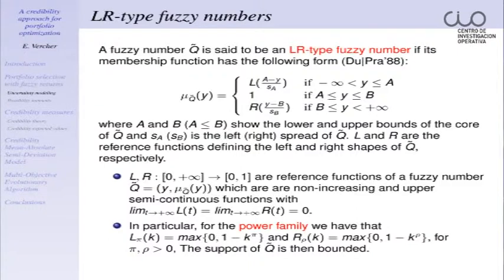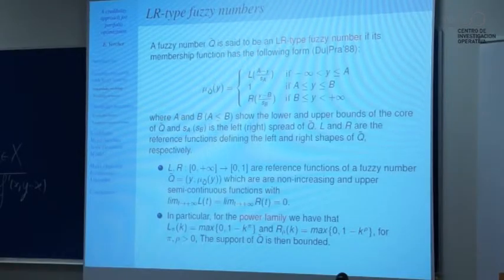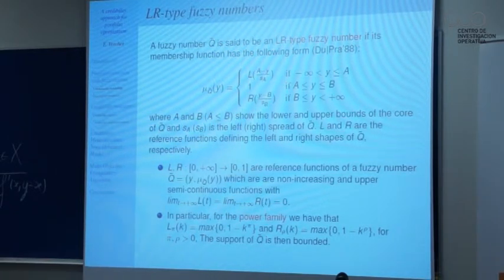An LR fuzzy number is a number whose membership function has the following form — this is a very general definition of a fuzzy number. Capital A and capital B define the points with the maximal degree of membership and form the core of the fuzzy number. S and S_B define the spread of the fuzzy number, and the reference functions L and R are continuous non-increasing functions converging to zero that define the shape of the membership function.